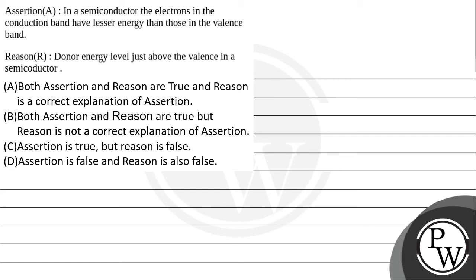Let's read the question. Assertion A: In a semiconductor, the electrons in a conduction band have less energy than those in the valence band.